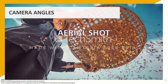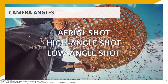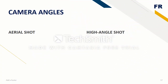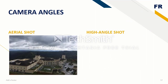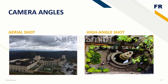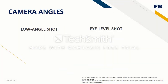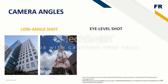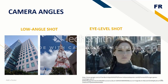In camera angles, we have the aerial shot, high angle shot, low angle shot, and eye level shot. The camera angle marks the specific location at which the movie camera or video camera is placed to take a shot. A scene may be shot from several camera angles simultaneously, giving a different experience and sometimes emotion. The different camera angles will have different effects on the viewer and how they perceive the scene.